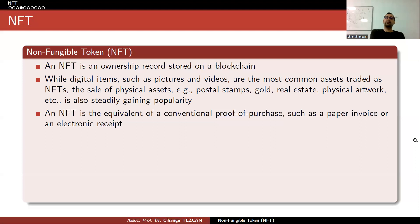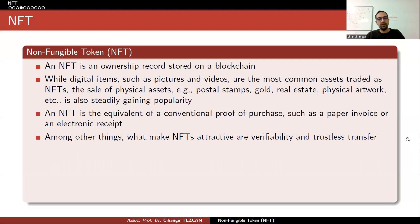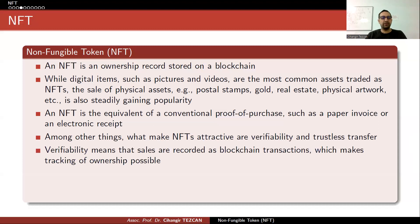You are saying that this account actually bought something, and what you bought is written there as a URL. At that URL there is a JSON file which consists of two or three fields like name, description, and the image URL. Among other things, what makes NFTs attractive are verifiability and trustless transfer.